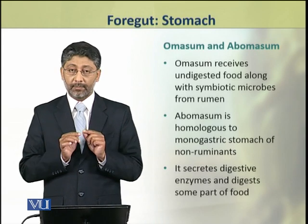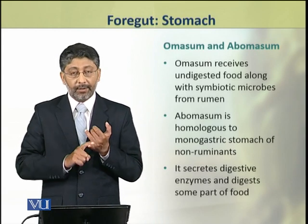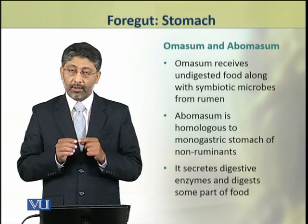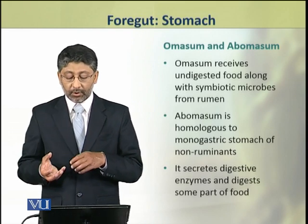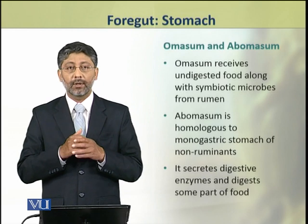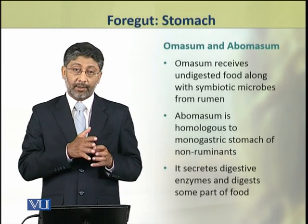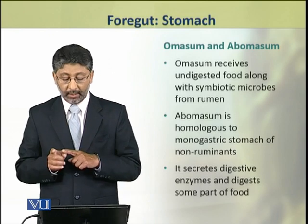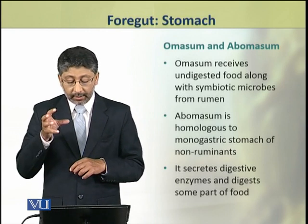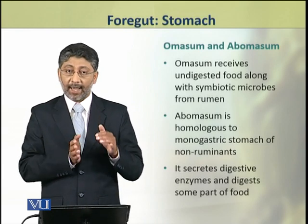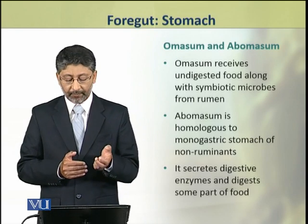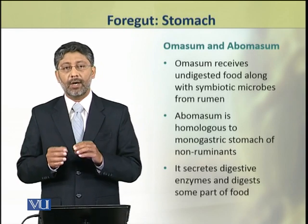The omasum receives un-digested food from the rumen, and along with this food, the many symbiotic microbes that were in the rumen also come to the omasum. The abomasum is the true homologous stomach, which is functionally equivalent to the single-chamber stomach found in non-ruminants. This true stomach has a secretory role — it secretes digestive enzymes, maintains the correct state of the stomach, and also digests some protein from the food.